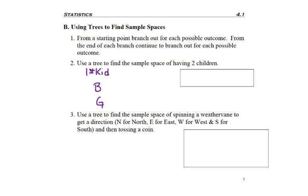And you could even actually start with a branch from there, but I don't know that you need that. But now I need to worry about having the second kid. And if I had a boy first, I could have a boy or a girl next. If I had a girl first, I could have a girl or a boy next.